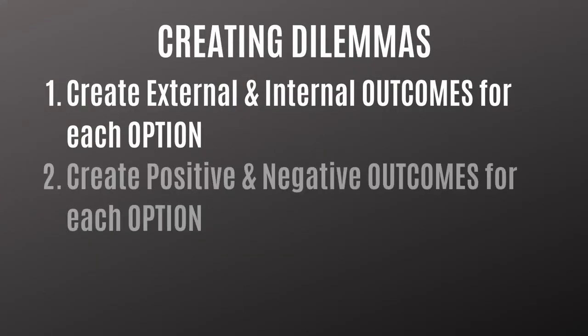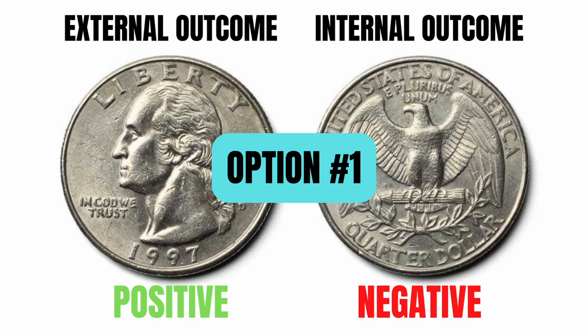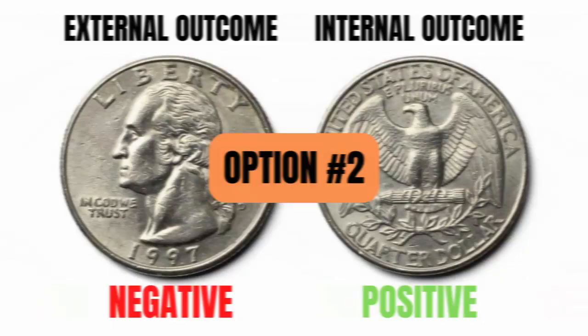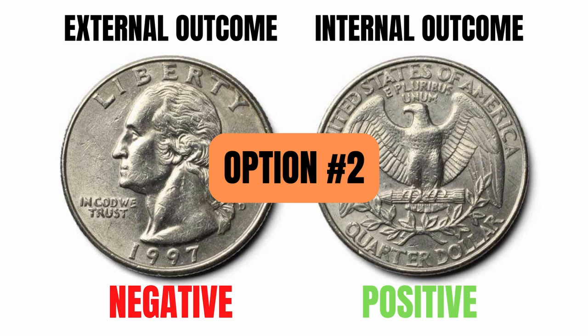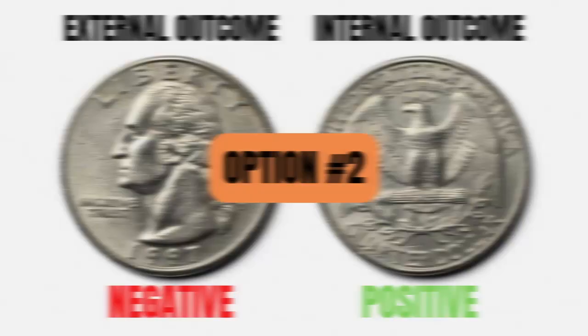Step two is that one side of the coin should be positive and the other side should be negative. So for instance, the first option might have a positive external outcome but a negative internal outcome — meaning the character will feel bad if they make that decision. And then the other option would have a negative external outcome but a positive internal outcome.